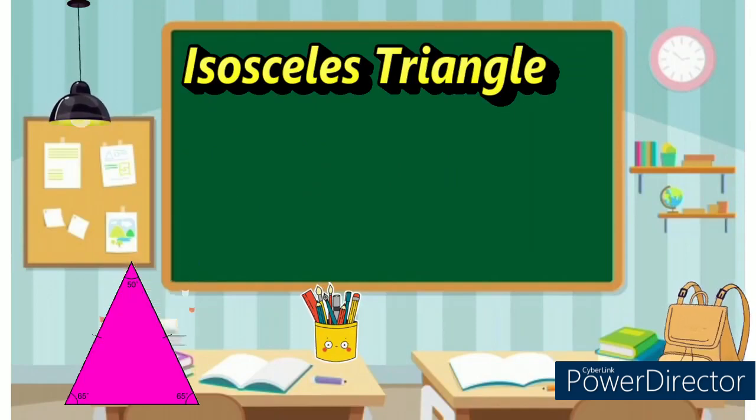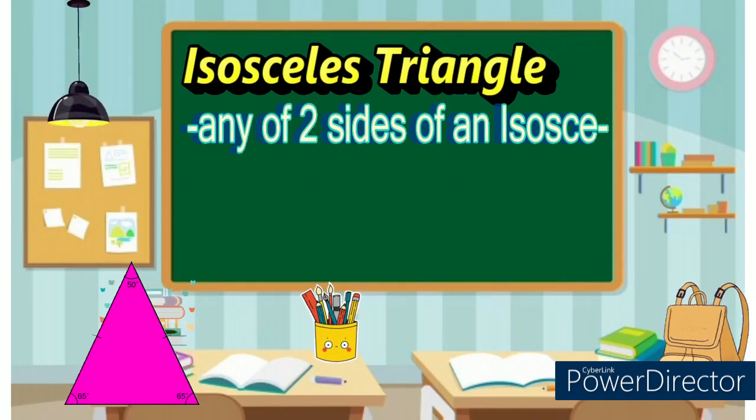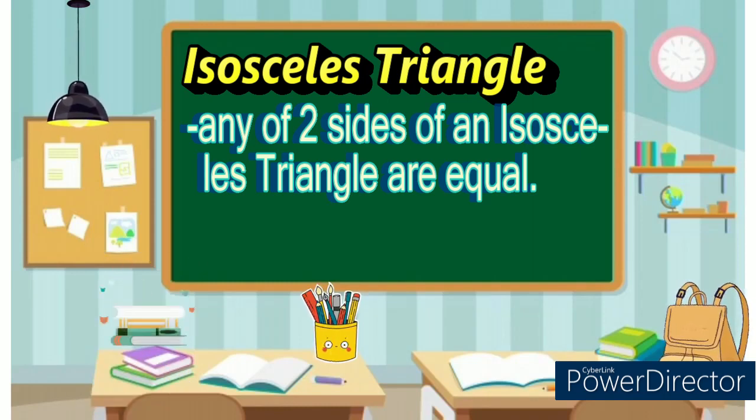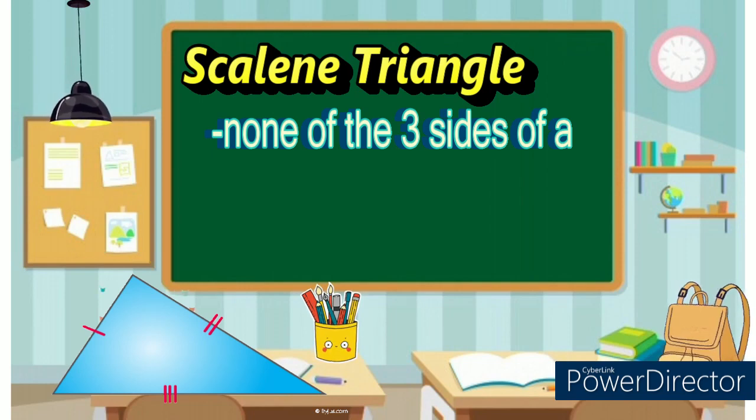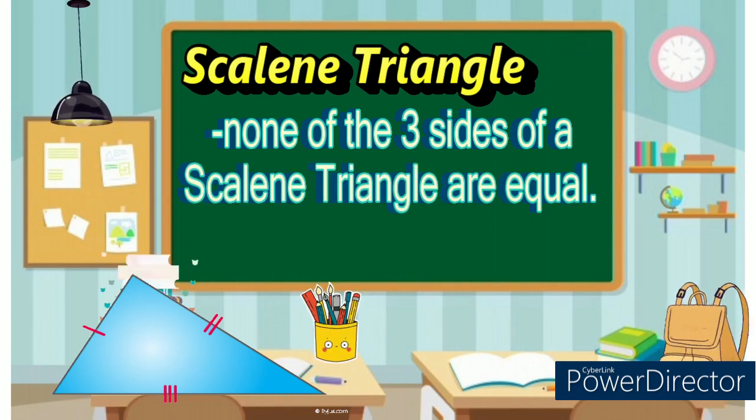Isosceles triangle: any of the two sides of an isosceles triangle are equal. Scalene triangle: none of the three sides are equal.